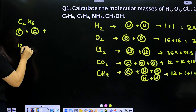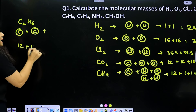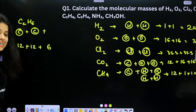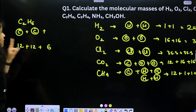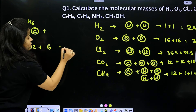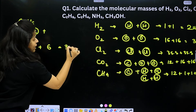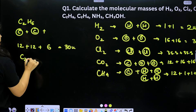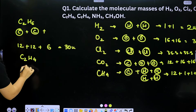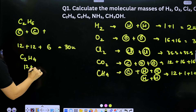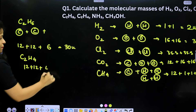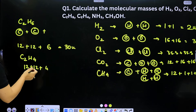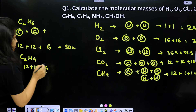For C₂H₆: carbon = 12u each, so 2 carbons = 24u; 6 hydrogens = 6u; total = 30u. For C₂H₄: 2 carbons = 24u, 4 hydrogens = 4u; total = 28u.